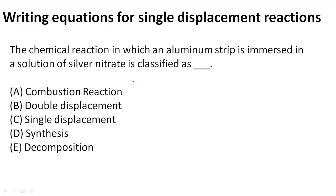Writing equations for single displacement reactions. In this problem, the chemical reaction in which an aluminum strip is immersed in a solution of silver nitrate is classified as what?